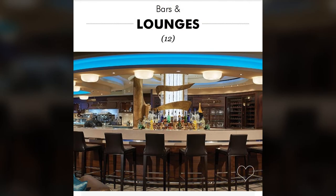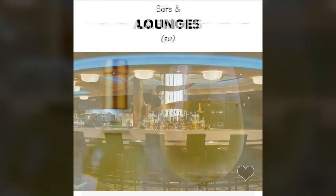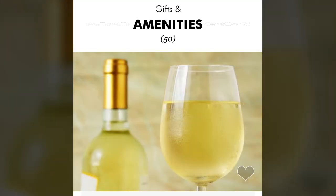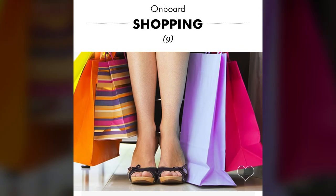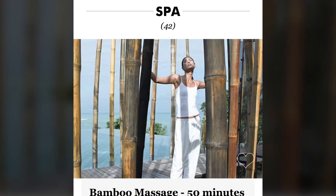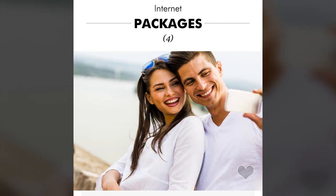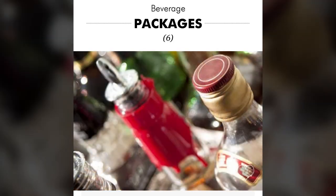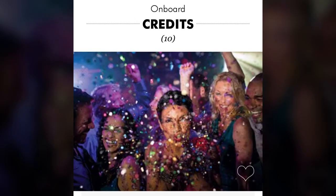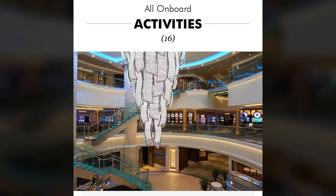The bars and lounges, gifts and amenities, onboard shopping, spa, photo packages, internet packages, beverage packages, onboard credits, and all onboard activities sections provide additional information or the ability to purchase specific items and packages for your cruise. The items available will vary from cruise to cruise, so be sure to explore each section before you board.